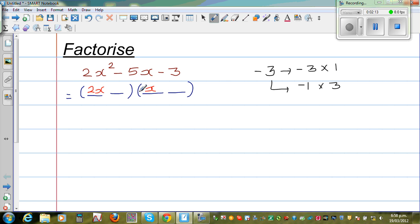So if I put say negative 3 and plus 1, will it work? This and this does give you minus 3, but if you look at this, 2 multiplies to give you 2x times 1 is 2x, and minus 3 times x gives you minus 3x. This will not give you minus 5x. So this is not the right choice, so this is wrong.